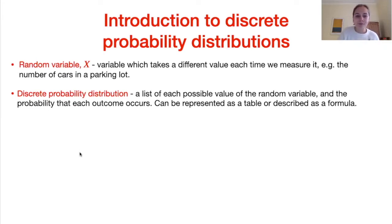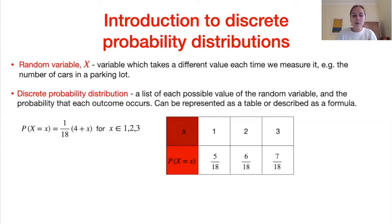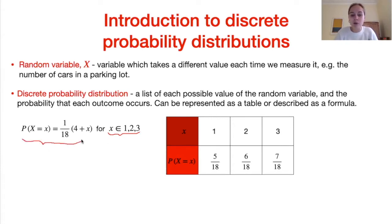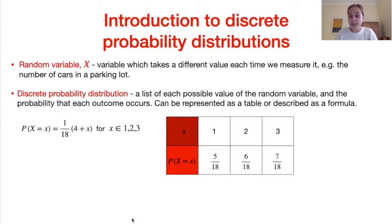Let's look at an example. We have a formula: the probability of a random variable being equal to some value x is equal to 1 over 18 times (4 plus x), for all values x belonging to {1, 2, 3}. This is a discrete probability distribution because it lists the possible values — 1, 2, and 3 — and for each value gives a probability. For example, when x equals 1, the probability is (4 + 1) over 18, which is 5 over 18.